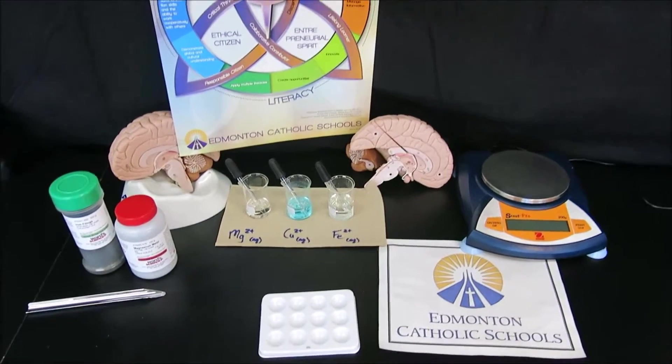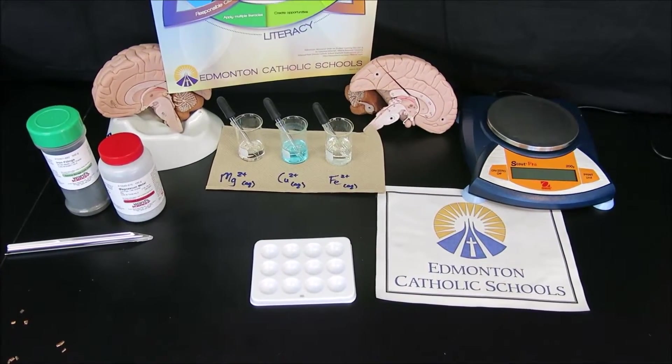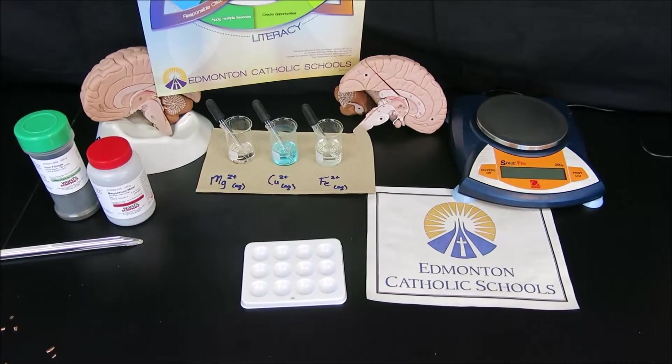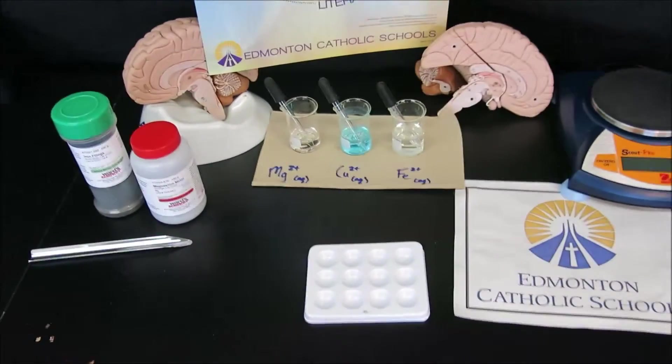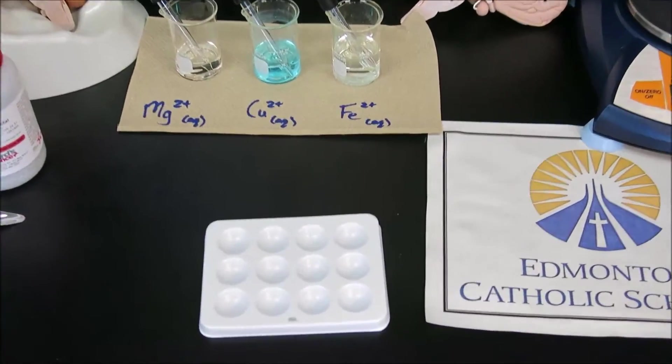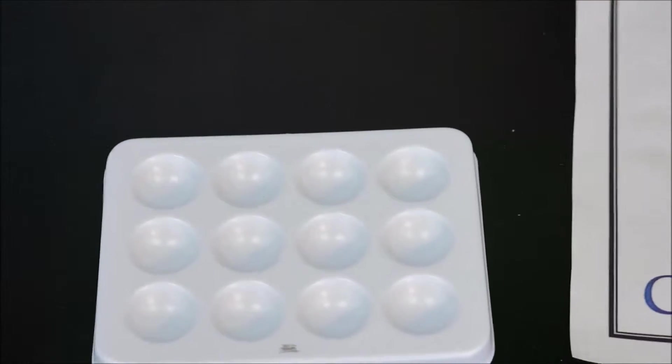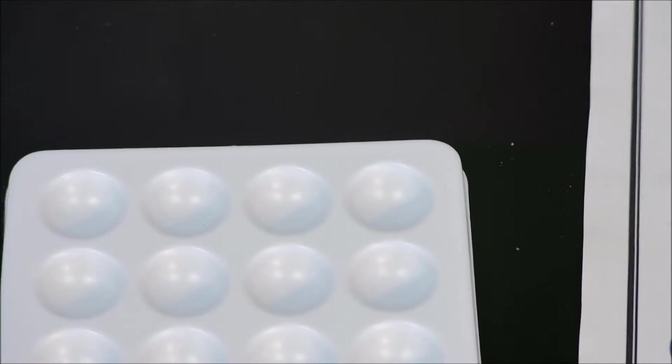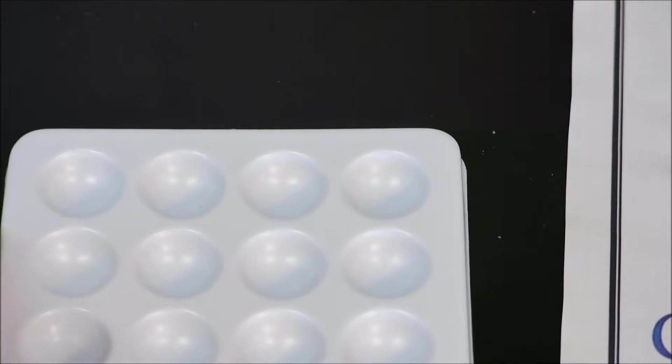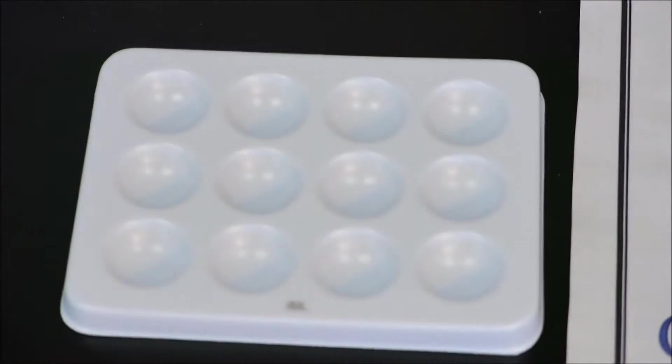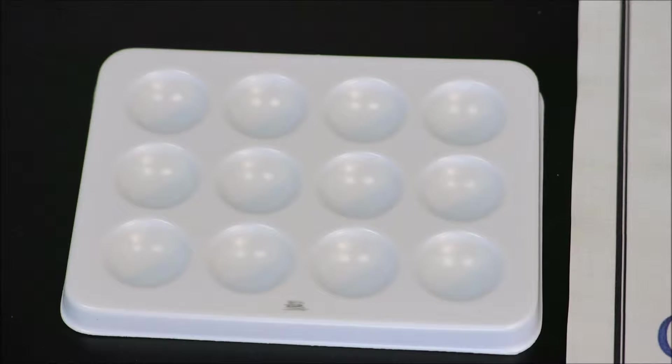To do this, we are going to do microchemistry, which involves using a spot plate. Now spot plates have small wells in them where a small volume of metal ion solution can be placed, followed by a small sample of metal. In this way, the reaction can be observed without using large-scale reactions, lots of volume or lots of solid.